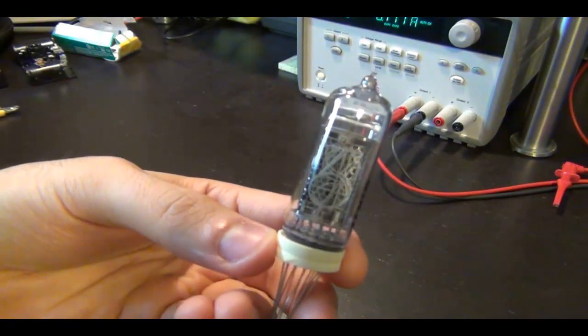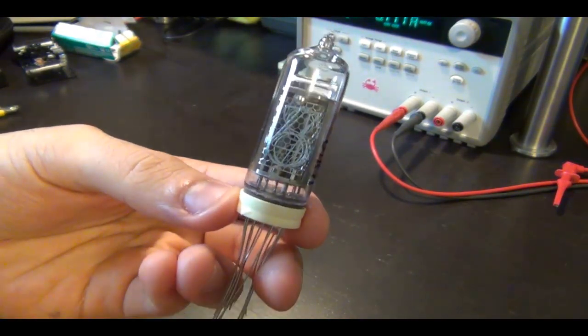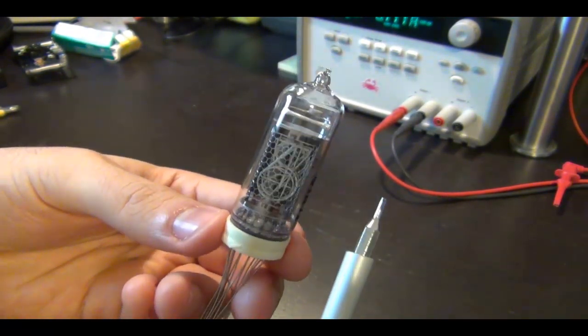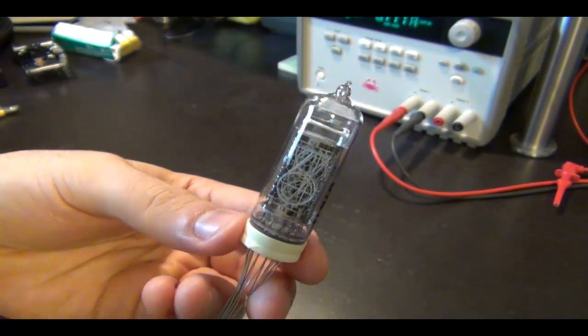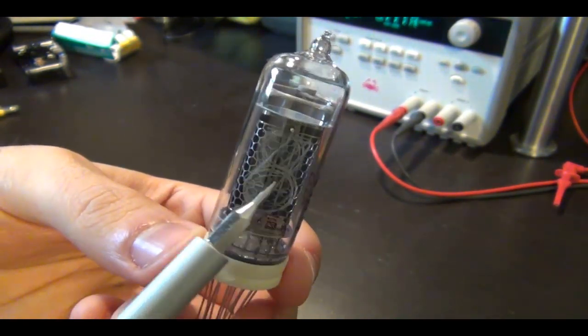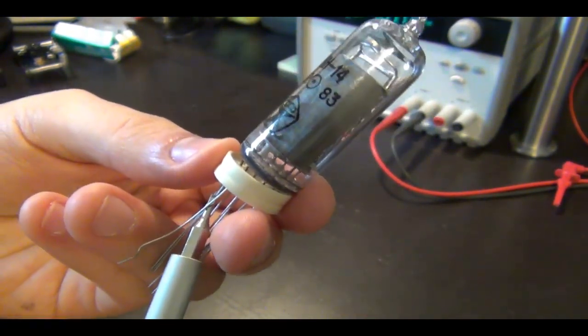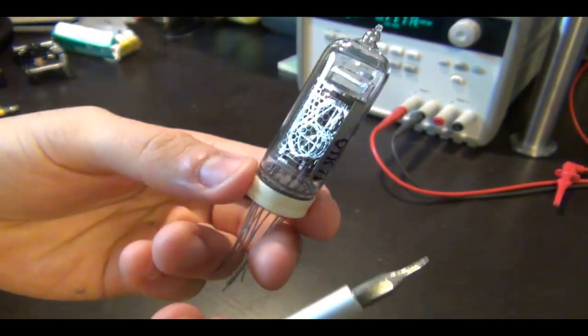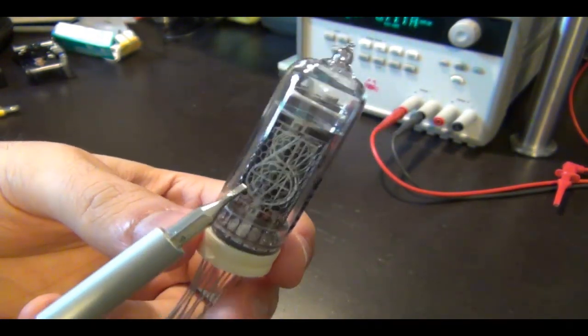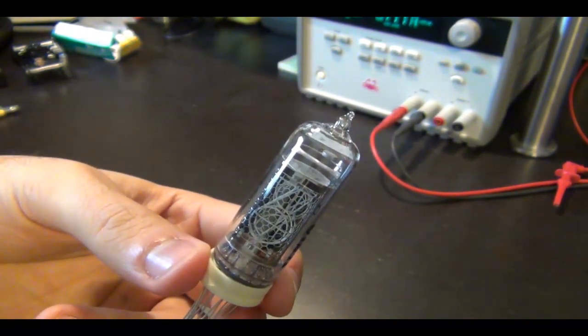So here I have a Nixie tube. This Nixie tube shows numbers between zero to nine and it has also two decimal points. So the way these Nixie tubes work is that the gas inside this tube is a low pressure neon, sometimes mixed with mercury and argon. And you have a round on the outside. You may be able to see it. There's this mesh that's connected all the way around. And at the back is a solid plate and it's connected to one of these pins. That's the anode pin.